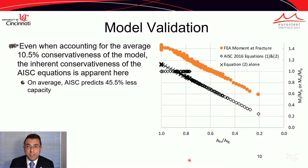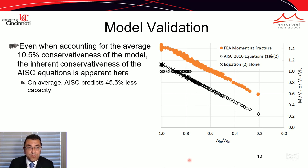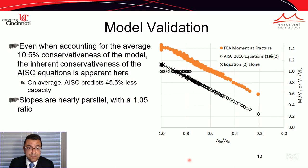Even accounting for this average 10.5% conservativeness, a comparison with the AISC equation shows about a 45.5% difference in predicted values. The slopes are nearly parallel, showing there is no special size or ratio causing this difference — it remains constant across the entire range of tests considered.